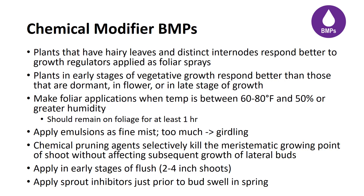Sprouting at the base of grafts can be successfully inhibited in nursery stock by a single spray application of naphthalene acetic acid ethyl ester when applied at a concentration of either 0.25 or 0.5% to the base of the trees just prior to bud swell in the spring.